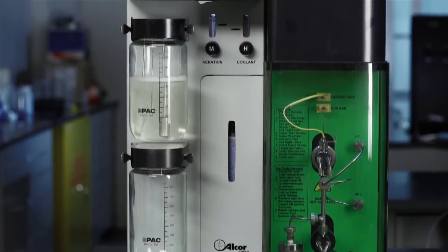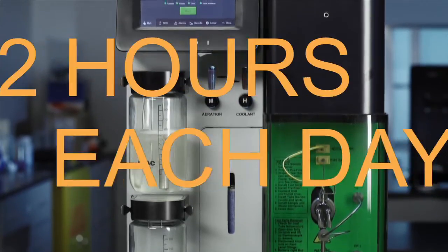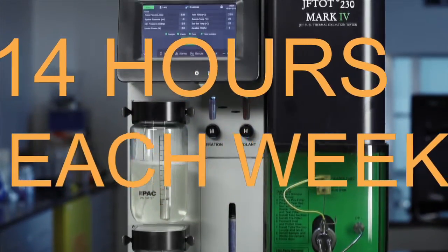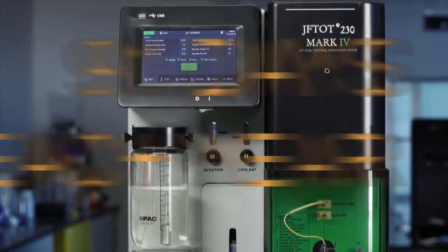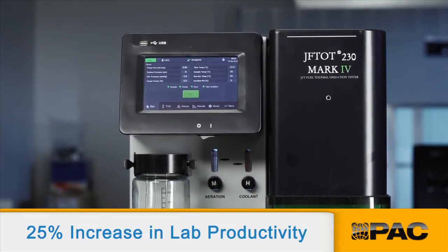If you run three tests every day, this time savings translates into a savings of 2 hours each day, or 14 hours each week, or 91 workdays each year. This means the Jephtot 4 can increase lab productivity by as much as 25%.